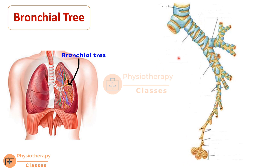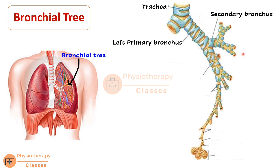Let us look at the bronchial tree in higher magnification, focusing on the left lung. We can see the trachea bifurcating into the right primary or principal bronchus and the left primary or principal bronchus. In the case of the left lung, there are only two lobes, so there will be only two lobar or secondary bronchi. The secondary bronchus is also known as the lobar bronchus — one for the upper lobe and one for the lower lobe.